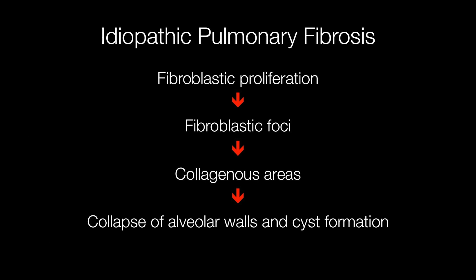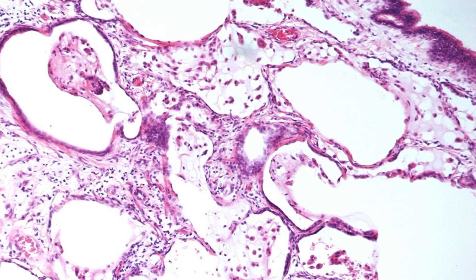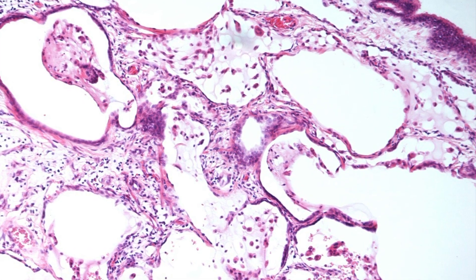UIP shows fibrosis of varying stages. So initially there is fibroblastic proliferation. Fibroblasts are the cells that produce collagen or scar tissue, and these form fibroblastic foci. But over time they will lose their cellularity, causing collagenous areas to develop, resulting in collapse of alveolar walls and cyst formation. And it is the cysts that cause the classical honeycomb lung appearance. And this is the histological appearance of UIP in idiopathic pulmonary fibrosis.